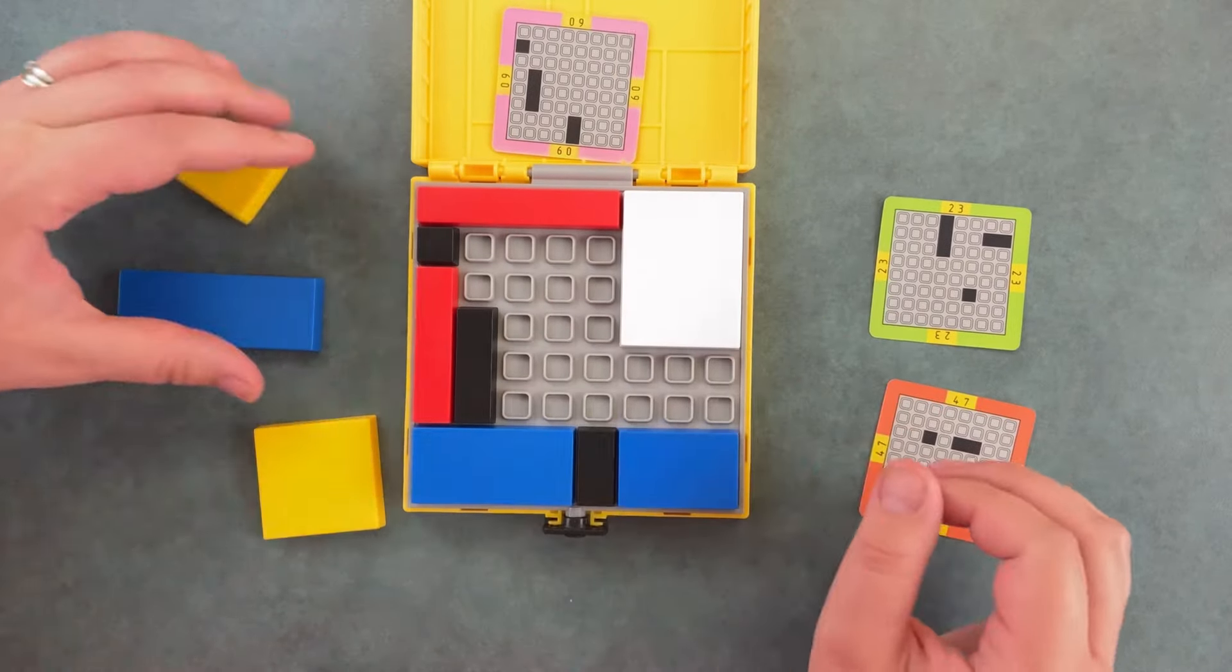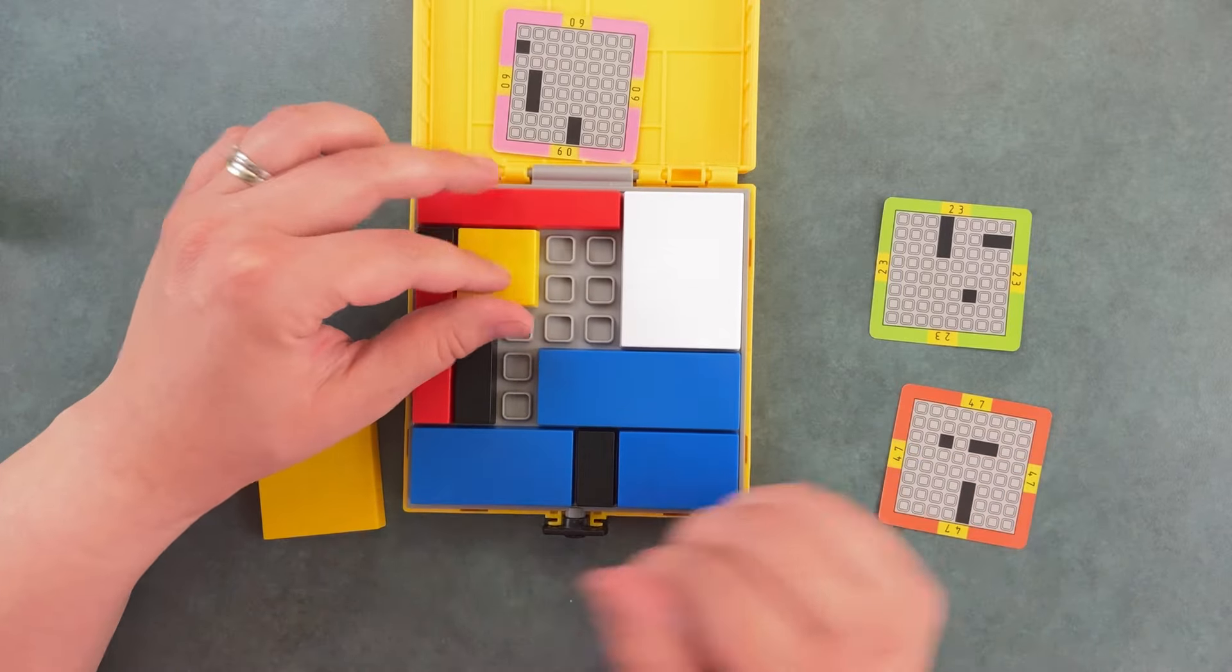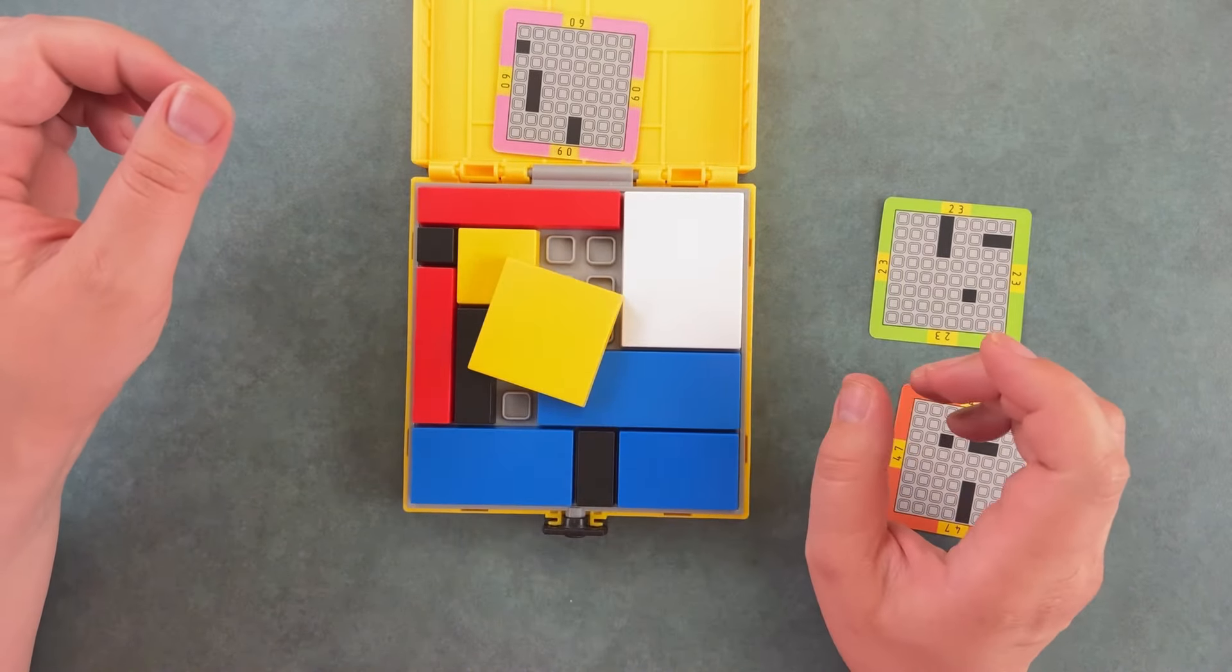We can use this white piece in the corner. We can take the blue piece and place it here. This yellow piece can go here, but unfortunately we do not have a spot for this yellow piece.